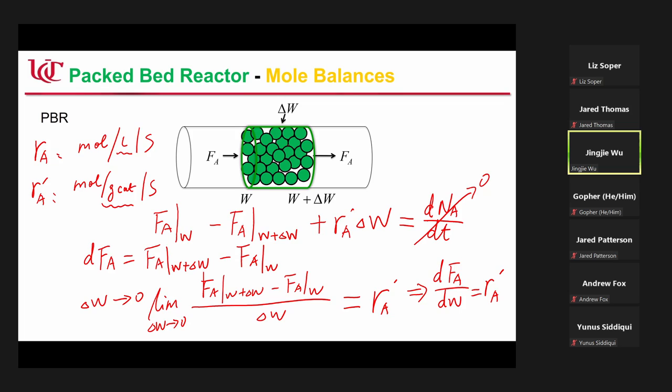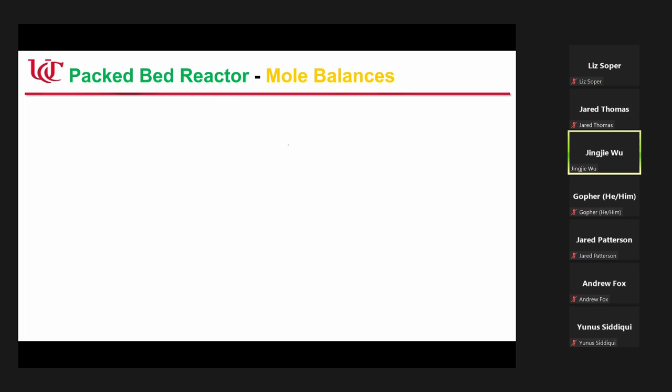Instead of delta V, we use delta W — the weight of the catalyst. Nothing new. It's actually very similar to the plug flow reactor.